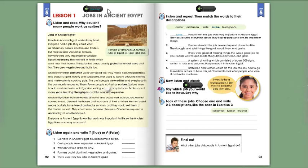Farmers were very important for Ancient Egypt's economy. They worked in fields which were near their homes. They planted crops, usually grains like wheat, corn, and flax. They grew vegetables and fruits too.